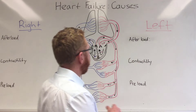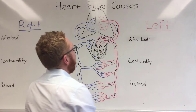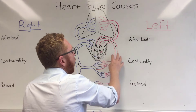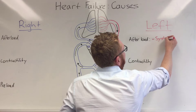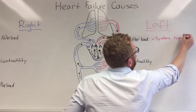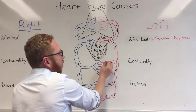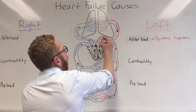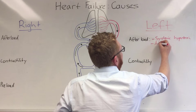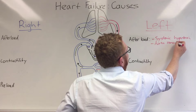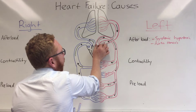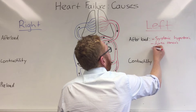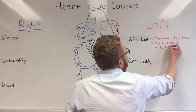Starting with afterload causes on the left side: this is where the left ventricle is trying to pump against excessive resistance. A common cause is systemic hypertension, where the vessels have closed down, making it very hard for the left ventricle to pump against. Another cause is a stenotic aorta — narrowing — which also makes it difficult to pump against. Or the aortic valve itself being stenotic — aortic valve stenosis — increases afterload and puts pressure on the left ventricle.